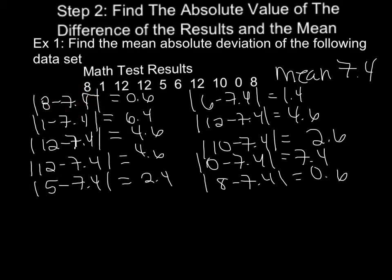So 8 minus 7.4 gave me 0.6. But then here, 1 minus 7.4 actually gave me negative 6.4. But since I'm taking the absolute value, I get positive 6.4.